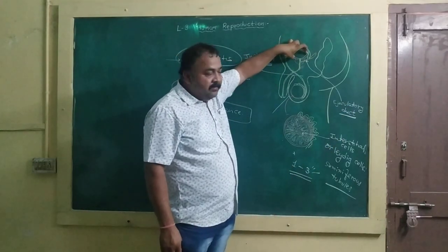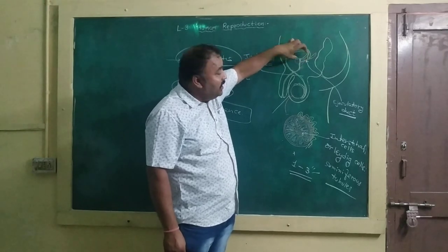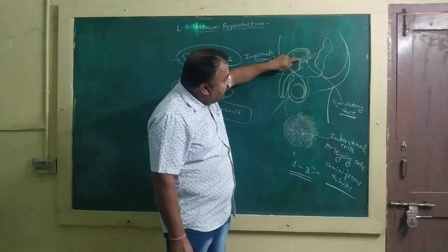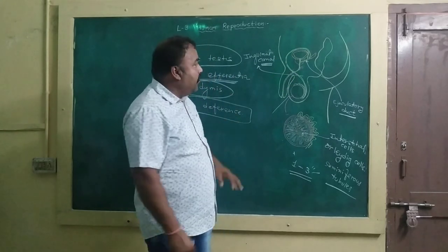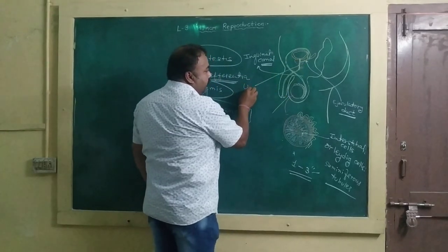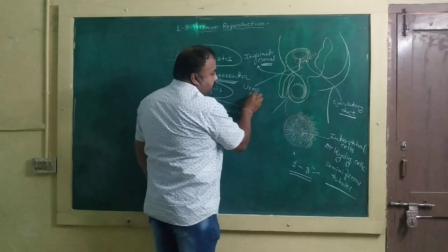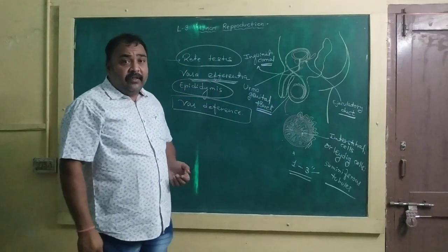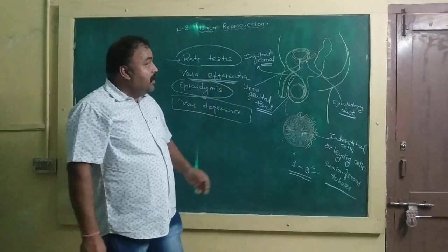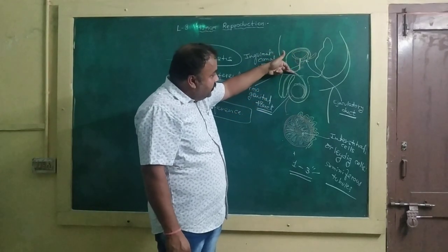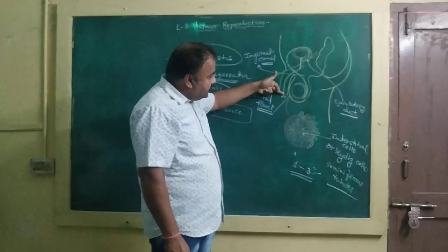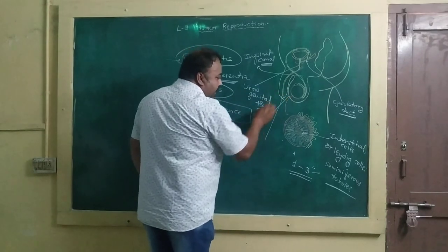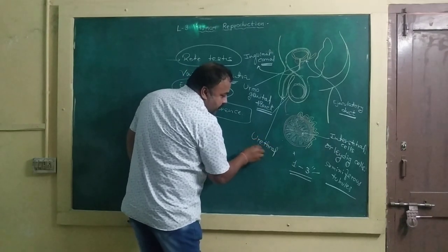The urinary bladder joins with the ejaculatory duct, and they unite to form the urinogenital tract, also called the urethra. The urethra passes through the penis and opens at the tip of the penis through an opening known as the urethral meatus.